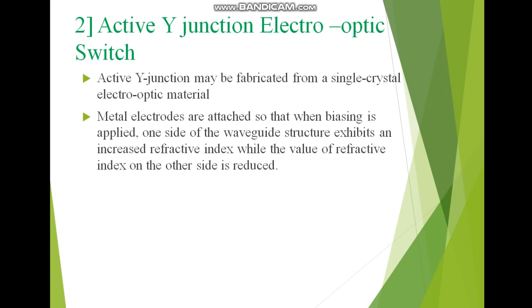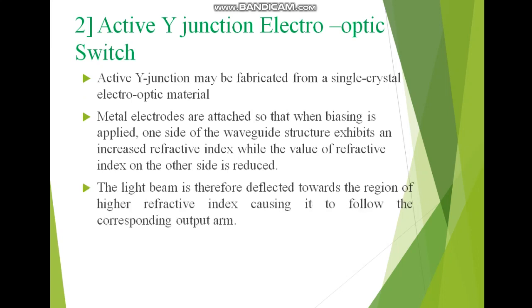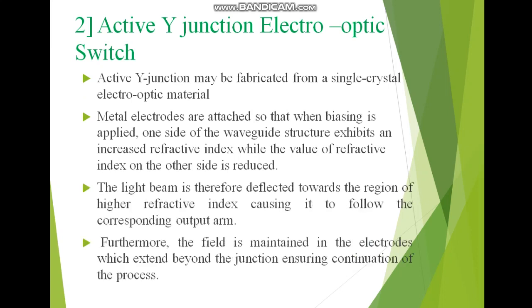The light beam is therefore deflected towards the region of higher refractive index. By applying biasing, the refractive index profile changes, causing the light beam to follow the corresponding output arm. Depending on which region has the higher refractive index, the beam will follow that path. Furthermore, the field is maintained in the electrodes which extend beyond the junction, ensuring continuation of the process.